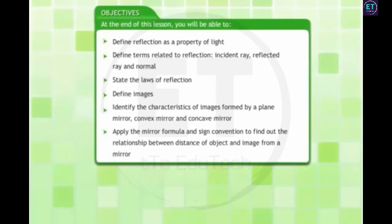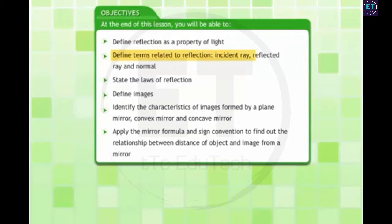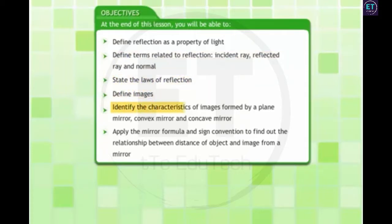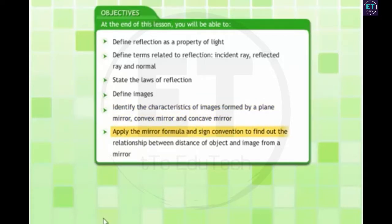At the end of this lesson, you will be able to define reflection as a property of light; define terms related to reflection — incident ray, reflected ray and normal; state the laws of reflection; define images; identify the characteristics of images formed by a plane mirror, convex mirror and concave mirror; and apply the mirror formula and sign convention to find out the relationship between the distance of object and image from a mirror.